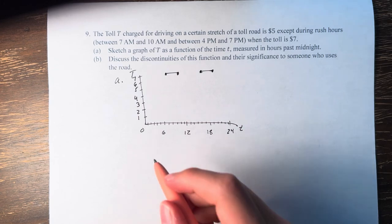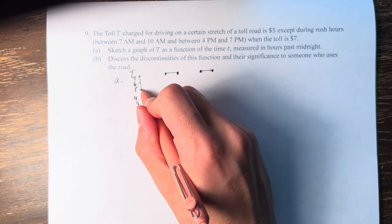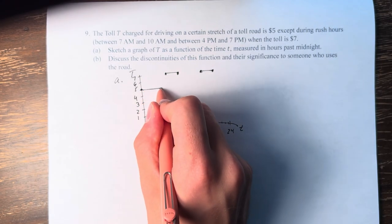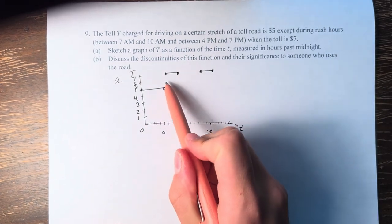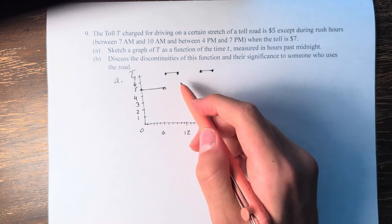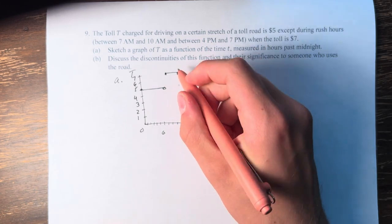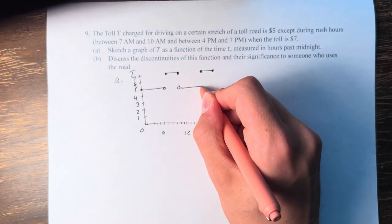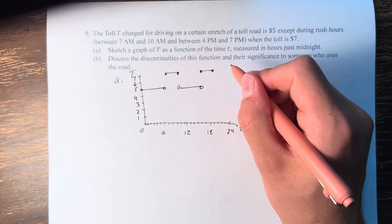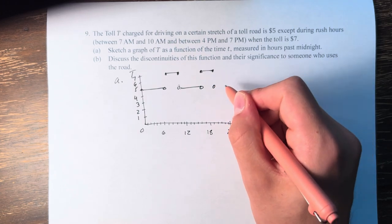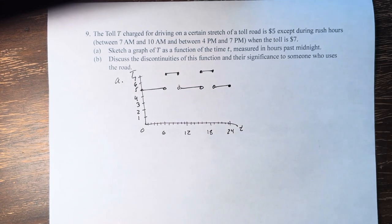And at all other times, it's at $5. So it's at $5 up until this point when it goes up to 7, then it remains at 7 and then drops back down until the second rush hour. And then it's there for a little bit and then drops back down like so.